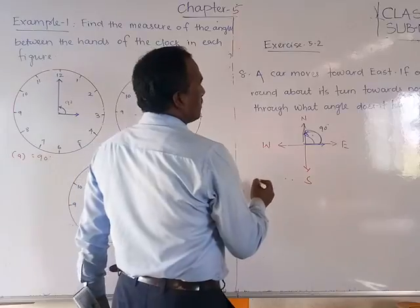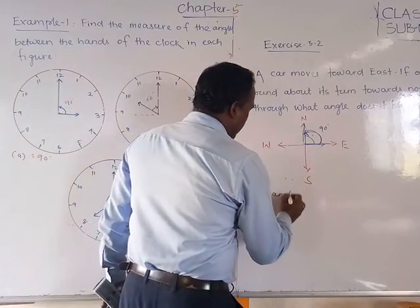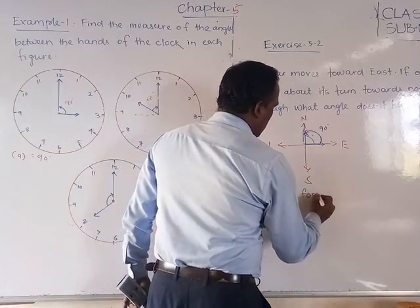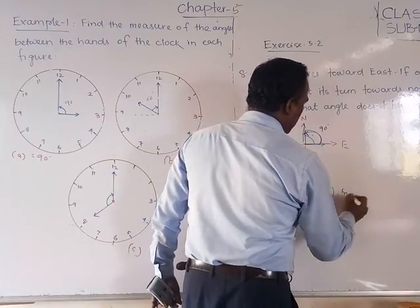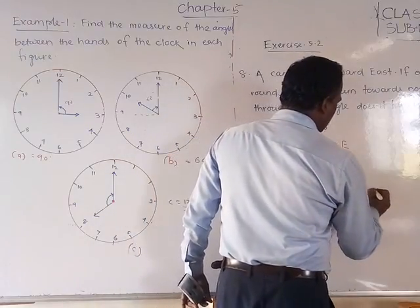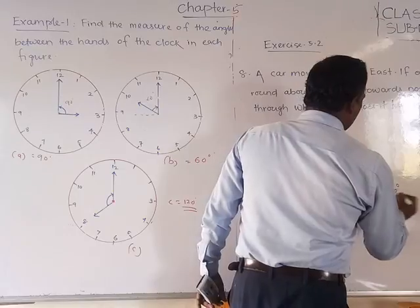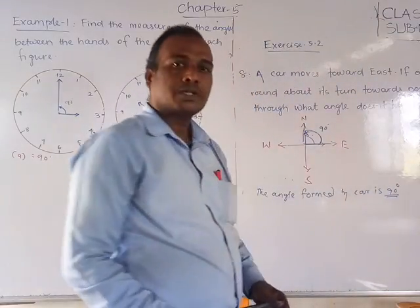What angle is formed? The angle will form 90 degrees, because north and east form 90 degrees. Hence, the angle formed by the car is 90 degrees.